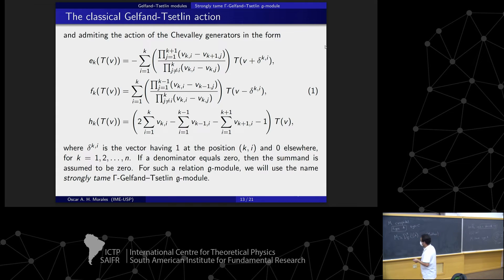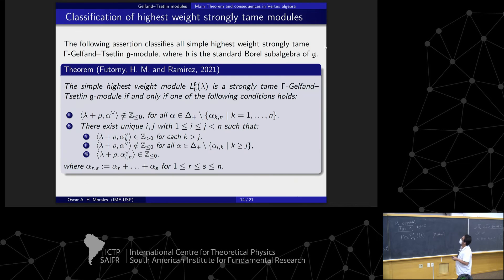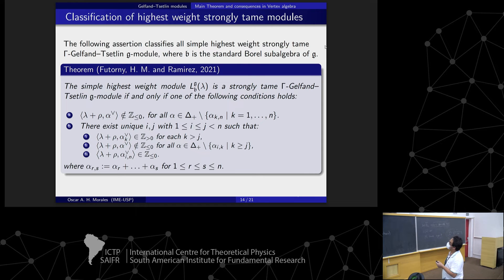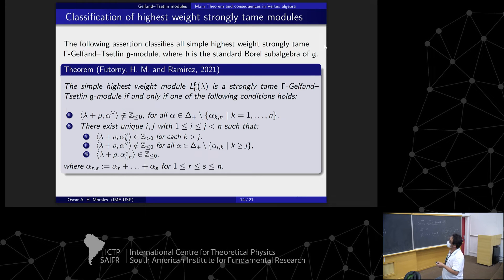On the other hand, certain modules are tame Harish-Chandra modules. We describe the basis and direction using the classical formula. We say this is a strongly tame situation. The first result: consider all simple highest weight strongly tame modules for this Gamma.